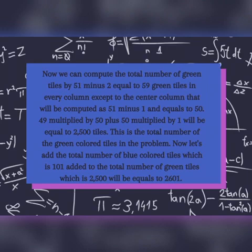49 multiplied by 50 plus 50 multiplied by 1 will be equal to 2500 tiles. This is the total number of green colored tiles in the problem. Now let's add the total number of blue colored tiles, which is 101, added to the total number of green tiles, which is 2500, which will equal 2601.